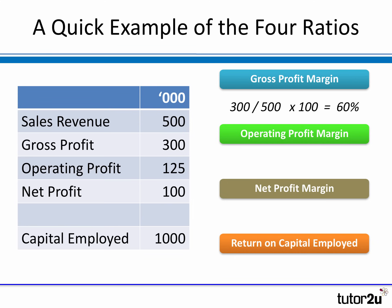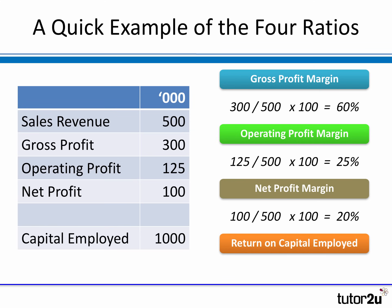Working down the income statement, we get to the operating profit, which we use to calculate the operating profit margin. In this case it's £125,000 divided by sales revenue of £500,000, multiplied by 100, giving us 25%. And there's a similar calculation for net profit margin — our net profit was £100,000, sales revenue £500,000, so we divide and multiply by 100 to get 20%. Finally, return on capital employed uses the capital employed number from the balance sheet. We take operating profit of £125,000 divided by £1,000,000, multiplied by 100, giving us 12.5%.